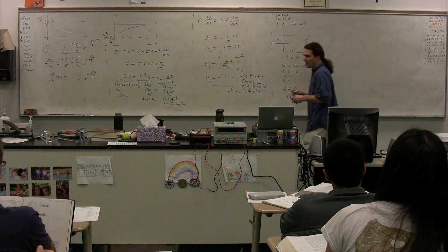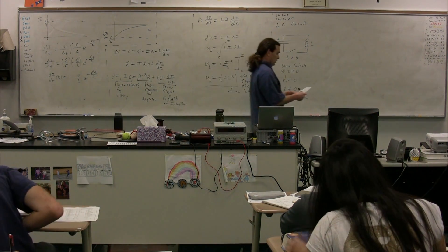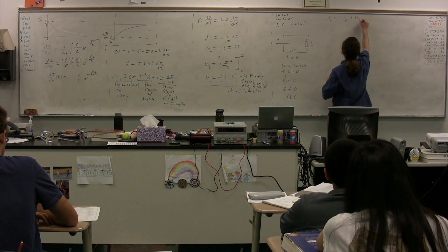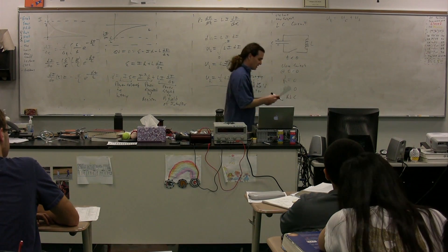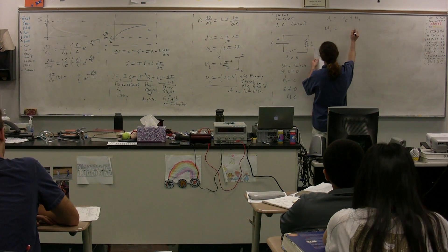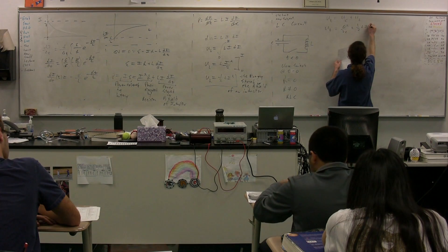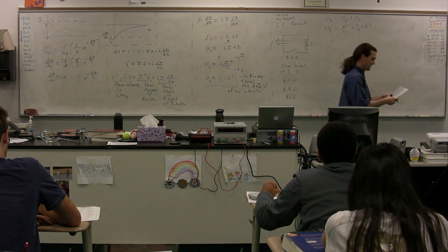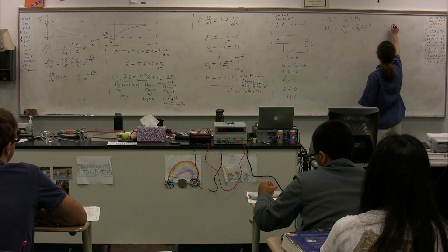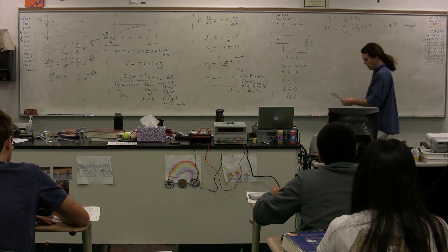We have our LC circuit. The total energy is going to be the energy stored in the capacitor plus the energy stored in the inductor. The total energy equals Q squared over 2C plus one half L times I squared. So, this is the total energy at any time. Q and I change — the charge on the capacitor and the current in the circuit are the things that change as a function of time.